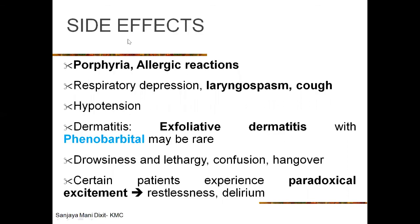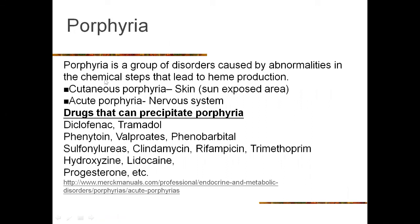Barbiturates can cause porphyria — a group of disorders caused by abnormalities in the chemical pathway that leads to heme production. It can be cutaneous porphyria (affecting skin in sun-exposed areas) or acute porphyria (involving the nervous system). Various drugs are known to precipitate porphyria, including diclofenac, primidone, phenytoin, valproates, phenobarbital, sulfonylureas, clindamycin, rifampicin, trimethoprim, hydroxyzine, lidocaine, and progesterone.